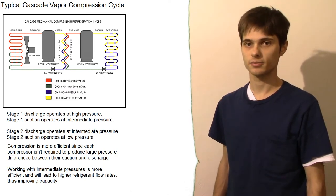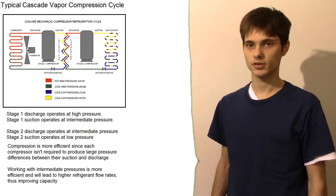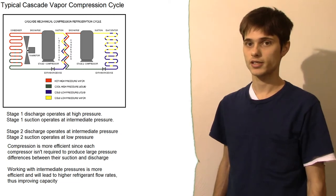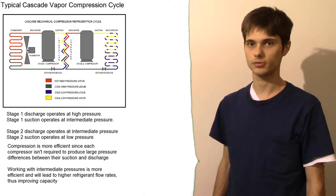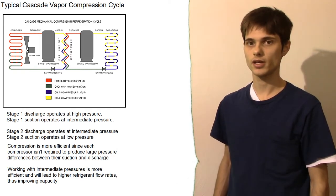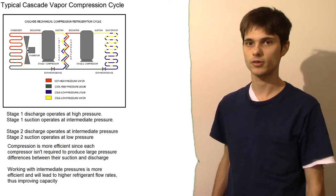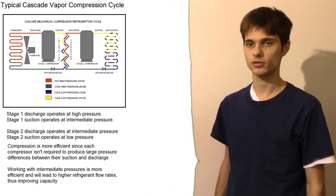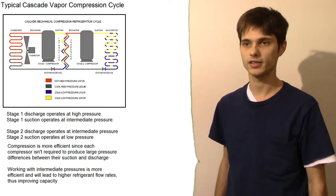In the cascade system, we talk about two cycles. One's usually referred to as a high temperature cycle and one's usually referred to as a low temperature cycle. The high temperature cycle then will take an intermediate pressure and compress it up to a high pressure. Now, the high pressure side of the high temperature cycle will be the condenser which ultimately releases the heat into the atmosphere.